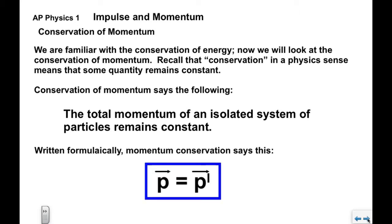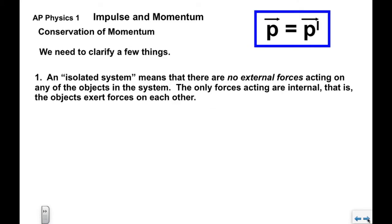Written formulaically, it very simply says p equals p prime. Now we need to clarify a few things. An isolated system means that there are no external forces acting on any objects in the system. The only forces acting are internal, that is, the objects exert forces on each other.